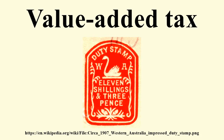From an accounting point of view, by this stage of its manufacture or distribution, the manufacturer remits to the government the difference between these two amounts and retains the rest for themselves to offset the taxes previously paid on the inputs. The value added to a product by a business is the sale price charged to its customer, minus the cost of materials and other taxable inputs.